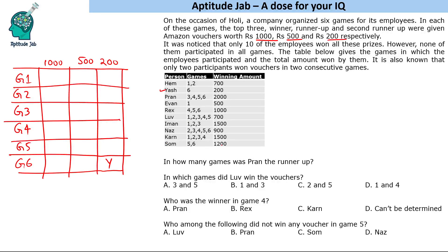Somm got 1200 in two games. 1200 is only possible as 1000 plus 200. He cannot come third in game six because Yes has already come third there. So Somm wins 1000 in one game and 200 in another game. Somm is also done.